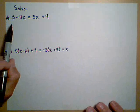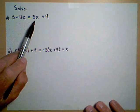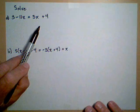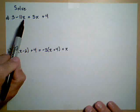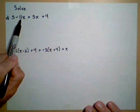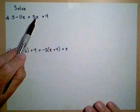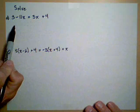So in our first example, we have 3 minus 11x equals 3x plus 4. The first thing we're going to want to do is combine like terms. So we want to get all the terms with x on the same side and all the terms without x on the other side.